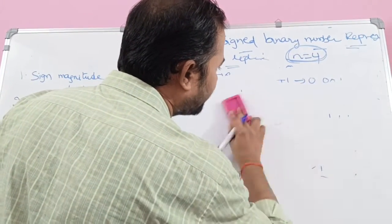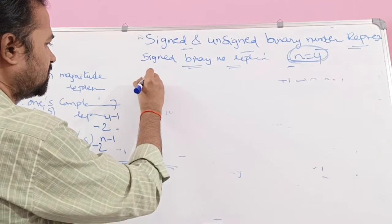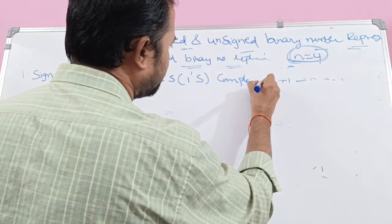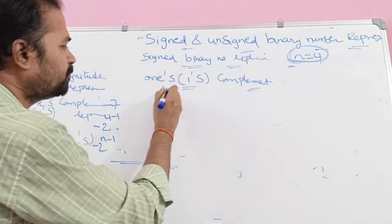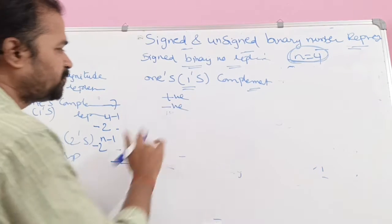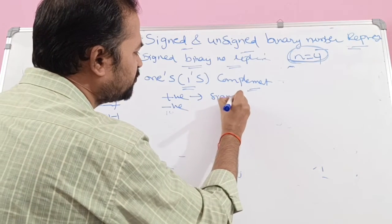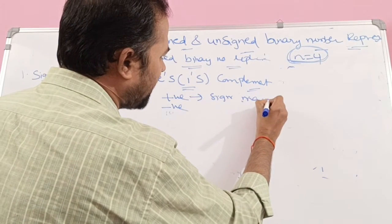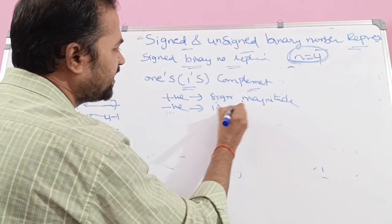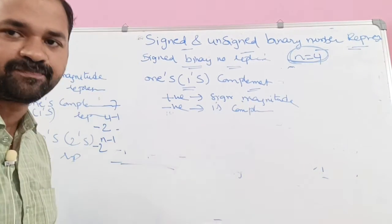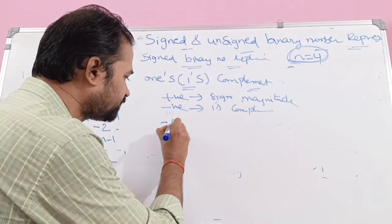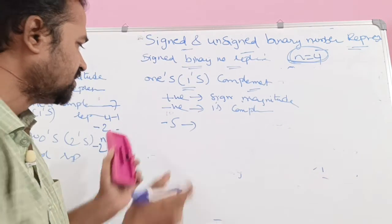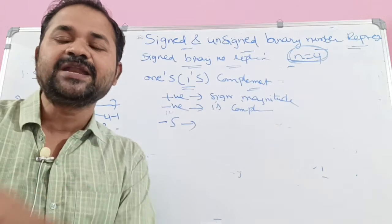Now let us see about one's complement representation. In one's complement representation, we can represent both positive and negative numbers. Positive numbers use sign magnitude representation, which we have already seen. For negative numbers, we use one's complement representation. Let the number be minus 5. This is a negative number, so we have to represent it in one's complement representation. First, how to represent +5 in binary notation with n = 4.